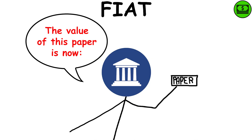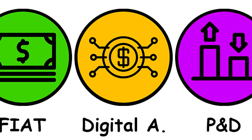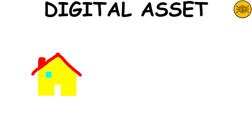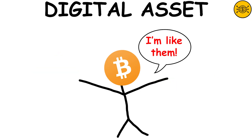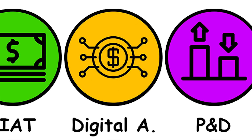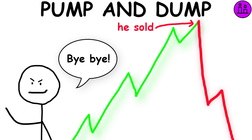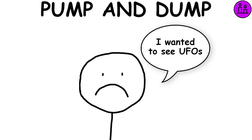Fiat: fiat money refers to legal tender whose value is tied to a government-issued currency. Digital asset: like a house, a watch, or a car, it is an asset that exists in digital form and is stored on the blockchain. Pump and dump: it consists of artificially inflating the price of a cryptocurrency through false and misleading positive statements to pump the value to a higher market price. Once the scheme operators sell their overvalued crypto, the price collapses and investors lose their money.